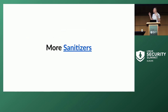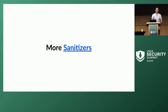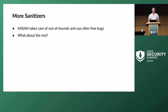Now let's move on to a few more sanitizers. For other sanitizers I'll give just a few notes. KASAN covers most memory corruption types. The question then was: what about other types of bugs? This is where more sanitizers came in.